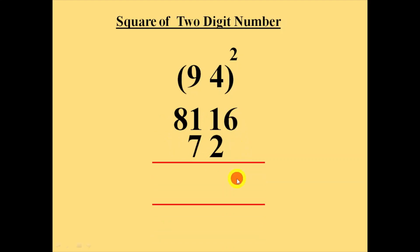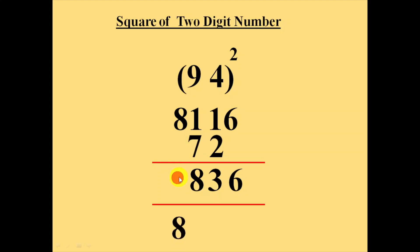6 plus 0 is 6, 2 plus 1 is 3, 7 plus 1 is 8, and 8 plus 0 is 8. So finally the square of the number 94 is 8836. It is easily and quickly calculated. Thank you.